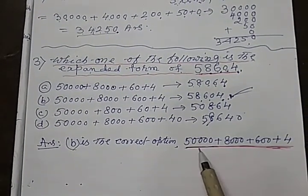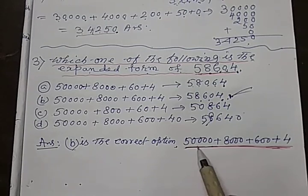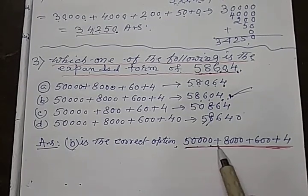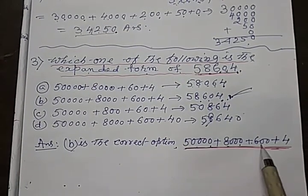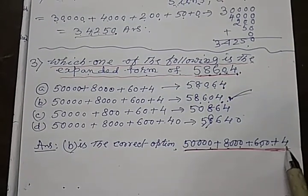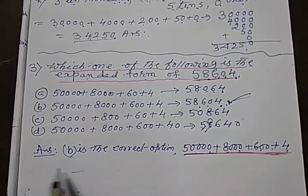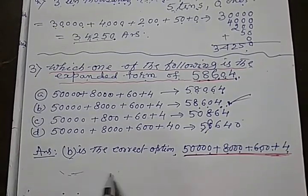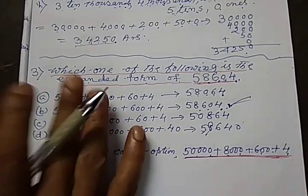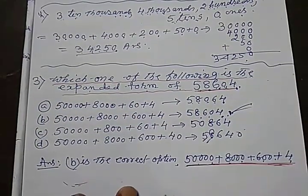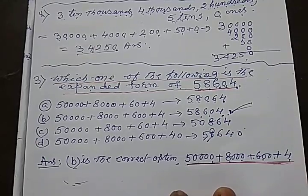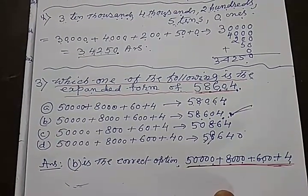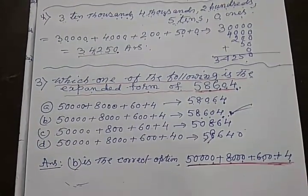The correct exponent form is 50,000 plus 8,000 plus 600 plus 4. Students, you will do all these sums in your classwork — copy neatly. This is your homework.